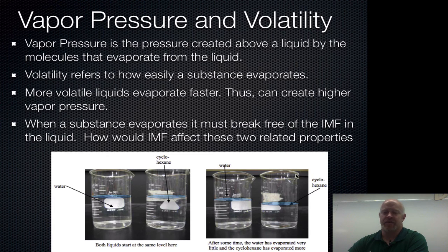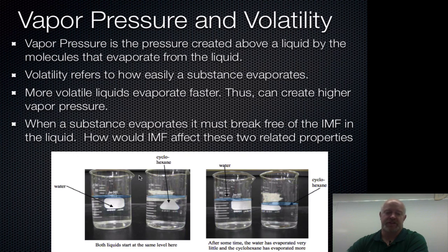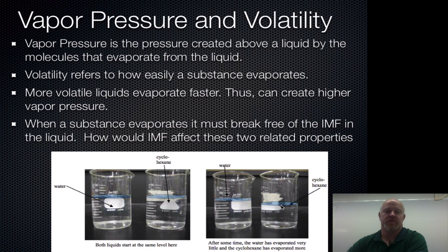Something called cyclohexane is a nonpolar substance. Even though it has six carbons in it and is a much heavier molecule than water, because it has only London dispersion forces, the forces holding it together are much weaker, so it's going to evaporate faster. Here are two pictures showing a starting point — water and cyclohexane — and then water and cyclohexane again after a certain amount of time. The water has evaporated a little bit, but the cyclohexane has definitely evaporated more. So the one with less intermolecular forces evaporates faster, giving more vapor pressure and more volatility.